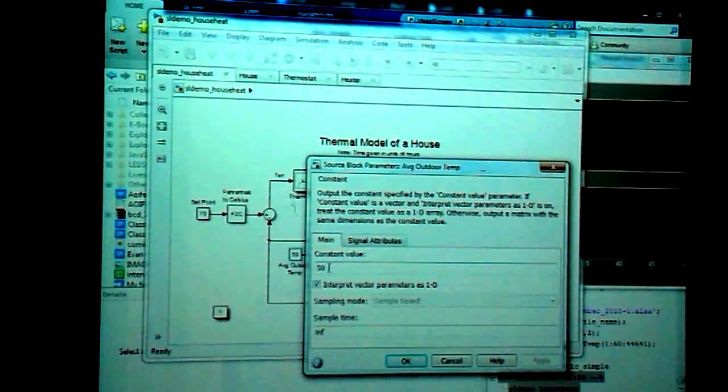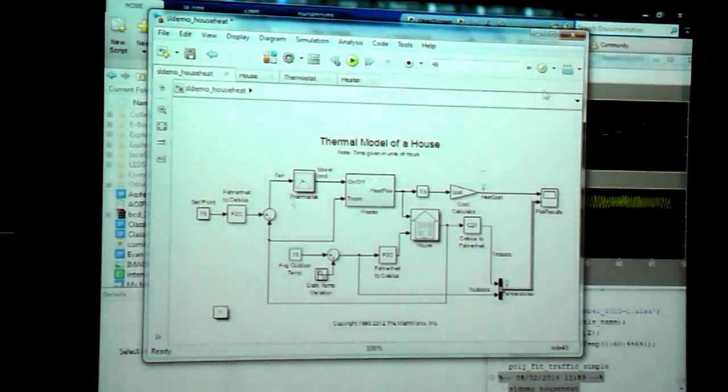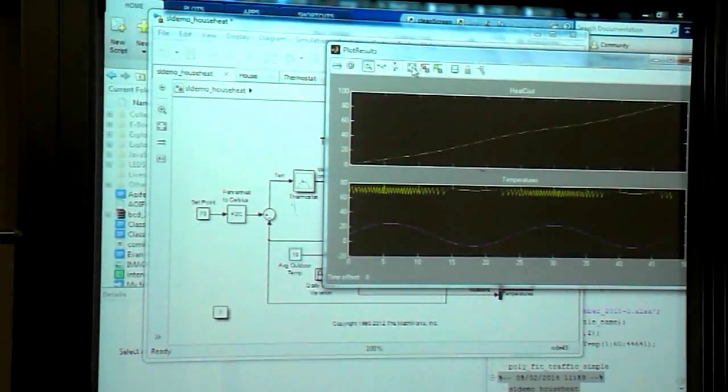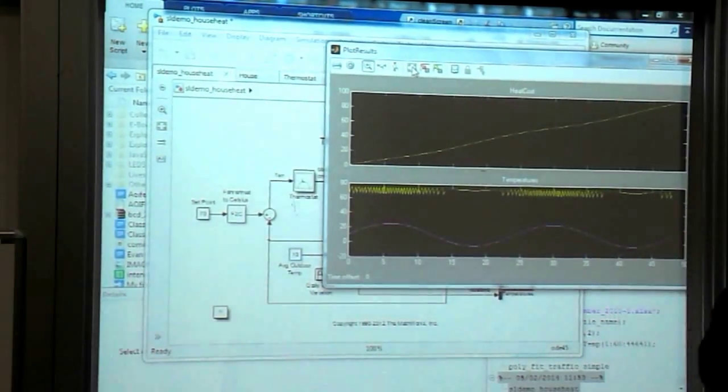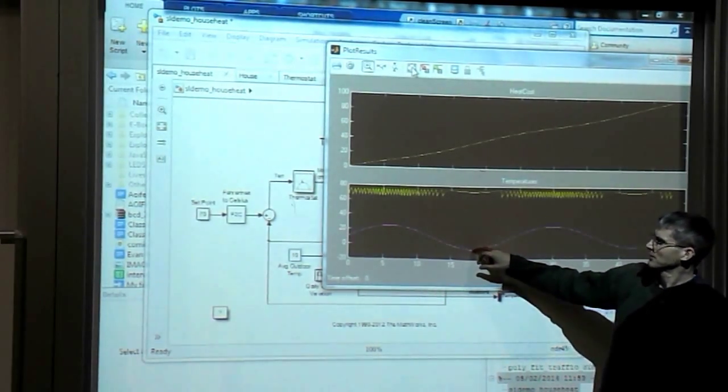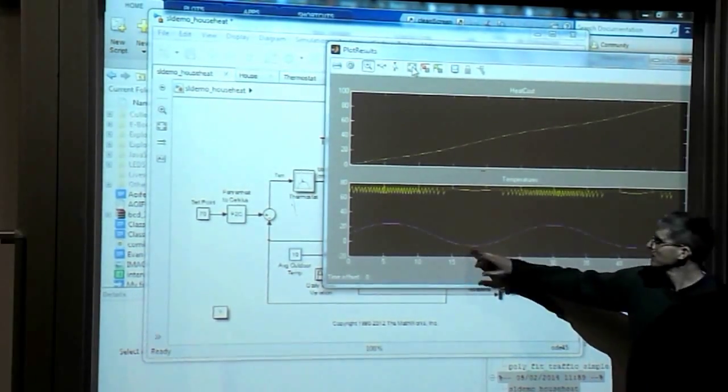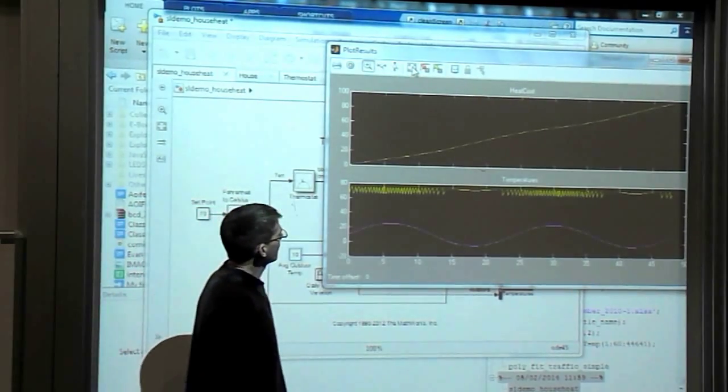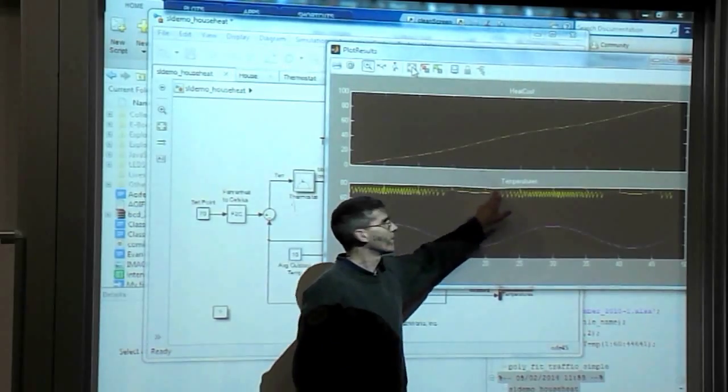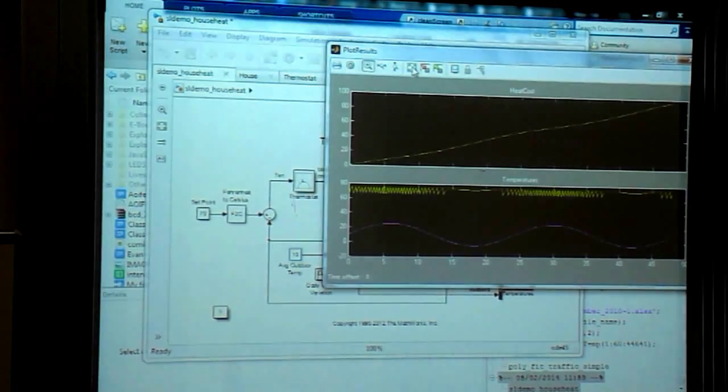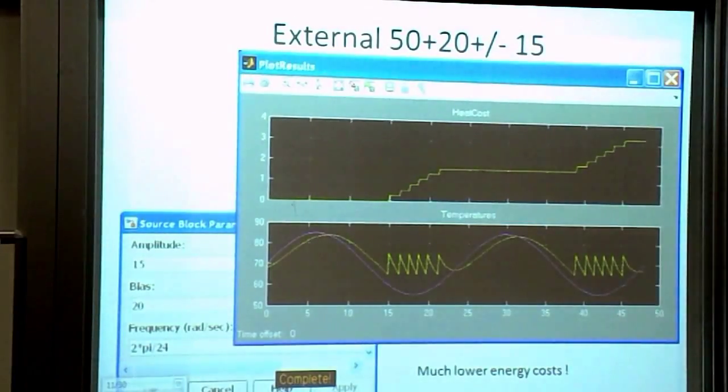If we bring down the temperature to make it really cold, that's Fahrenheit remember, and we rerun it, we should see something very different. As you can see here now, we're living in a really cold climate. 10 degrees Fahrenheit plus or minus 15. This is minus 5 Fahrenheit. As you can see, the heating costs are very significant. What's happening here? It's on all the time. Just about able to cope.